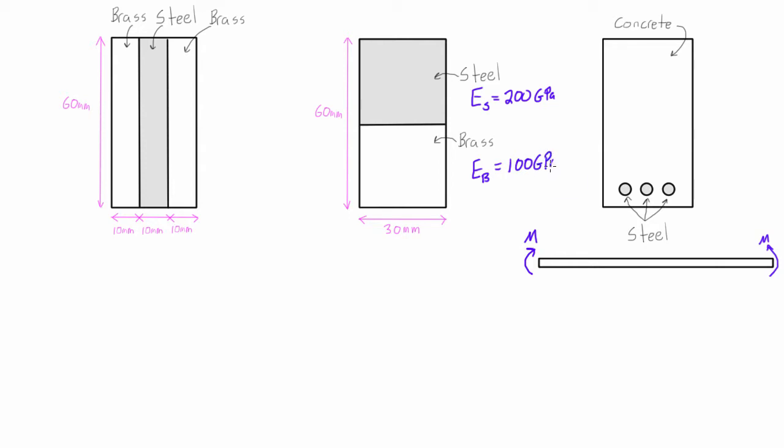So if we were looking at a pure bending problem in the past, we've been using this expression where we have stress is equal to negative M*y over I. Well this expression here is based on the assumption that the cross-section has a uniform modulus of elasticity. So if we have more than one, we can't use that.